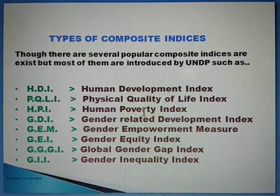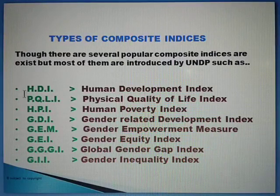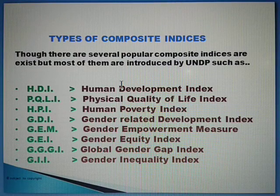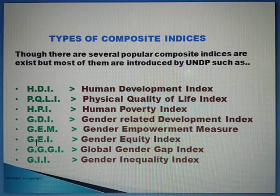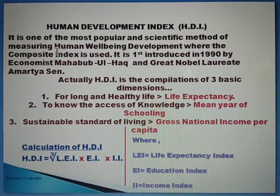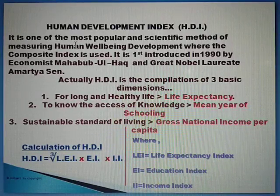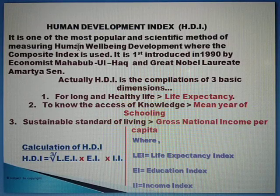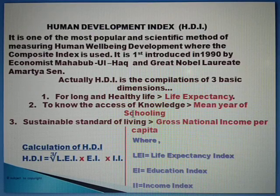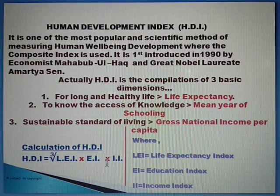I will discuss only the HDI or Human Development Index in this video. If you want to calculate other indices and have some problem, please mention it in my comment box and I will make another video on request. HDI is one of the popular composite indices used by UNDP to measure human well-being and development. It was first introduced in 1990 by the famous economist Mahbub ul Haq and Nobel laureate Amartya Sen. HDI is the compilation of three basic dimensions.